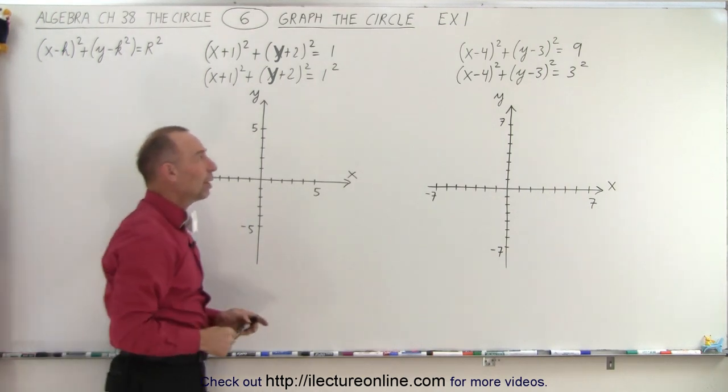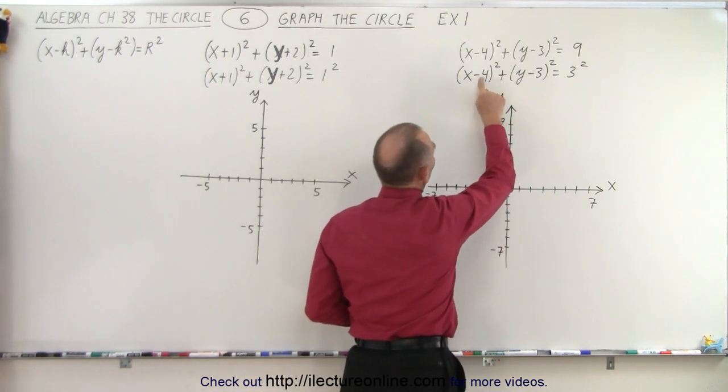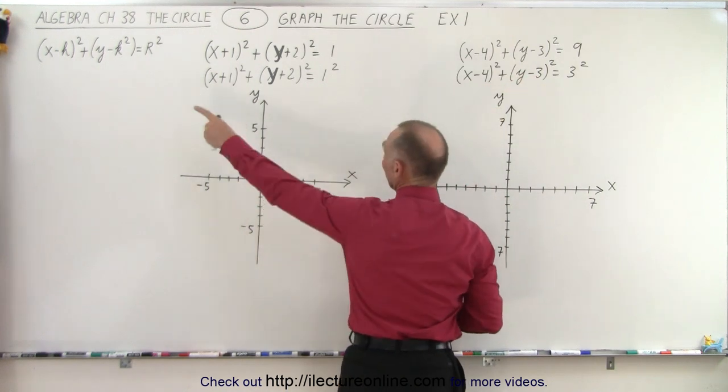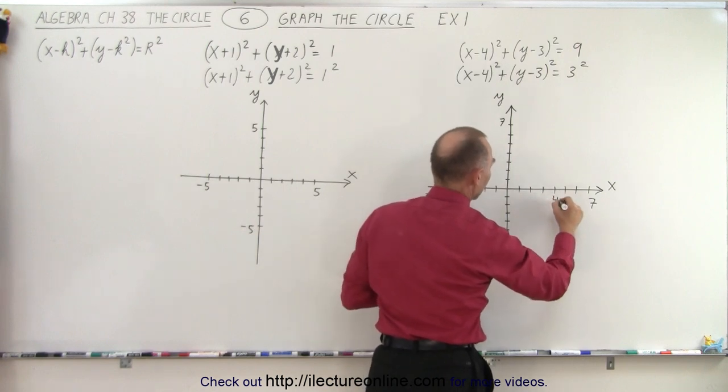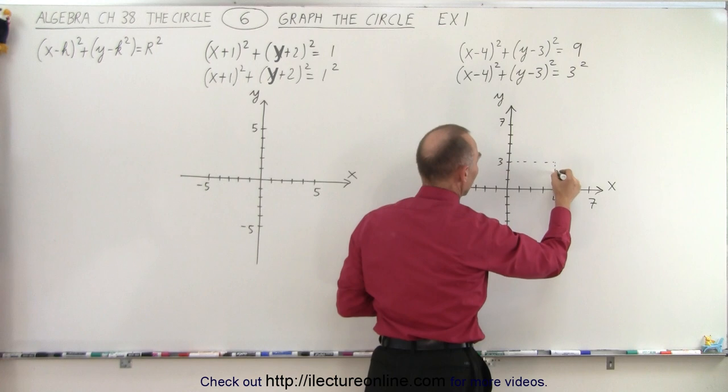So the next thing we want to do is find the center of the circle and notice that if these are minus signs then h and k are positive. You can see that from the general equation. So in this case h is equal to 4 and k is equal to 3. So where those two meet that would be the center of the circle.